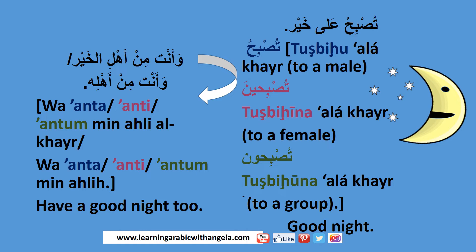To review: تصبحون على خير is used for a group. In response you say وأنت من أهل الخير or وأنت من أهله for a male, وأنتِ من أهل الخير or وأنتِ من أهله for a female, and وأنتم من أهل الخير or وأنتم من أهله for a group — all meaning have a good night too.